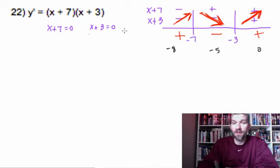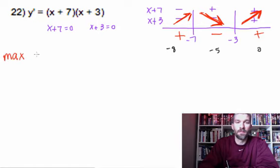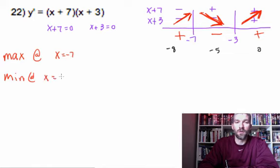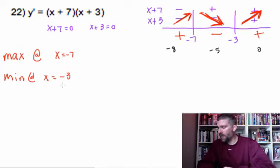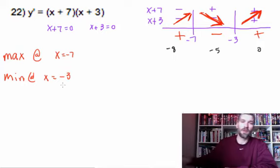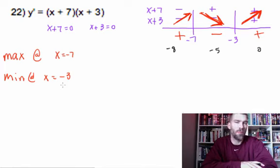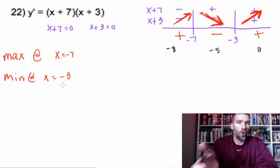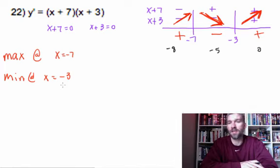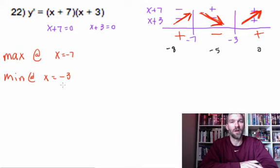So the extreme values are: a maximum at x equals negative 7, and a minimum at x equals negative 3. We don't have a specific original function to work with here, so all we can say is at what x-values the extrema occur — not what y-value goes with them.